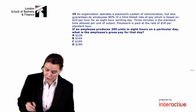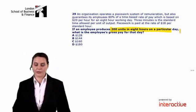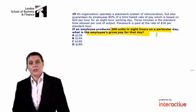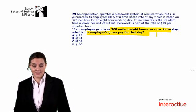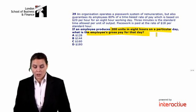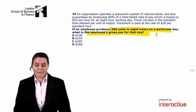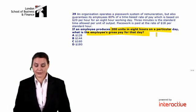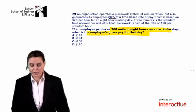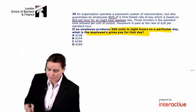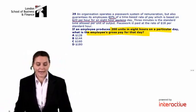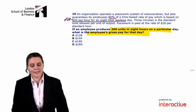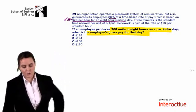We are asked: if an employee produces 200 units in eight hours on a particular day, what is the employee's gross pay for that day? An organization operates a piecework system of remuneration, but also guarantees its employees 80% of a time-based rate of pay, based on $20 per hour for an eight-hour working day. This acts as a minimum wage.